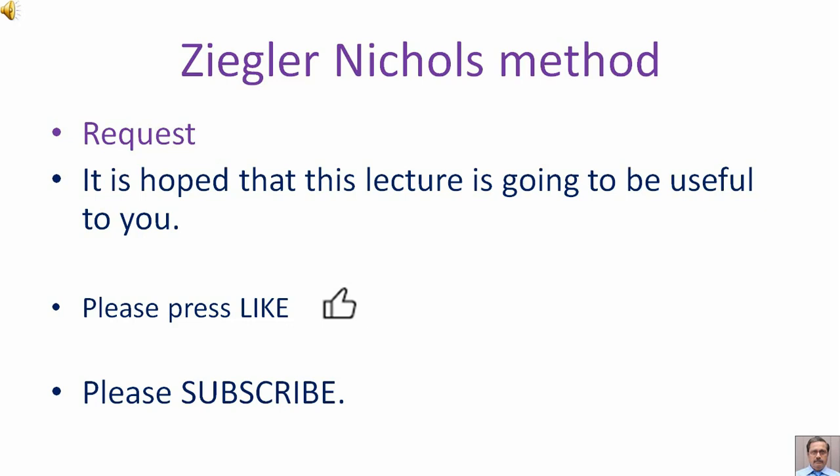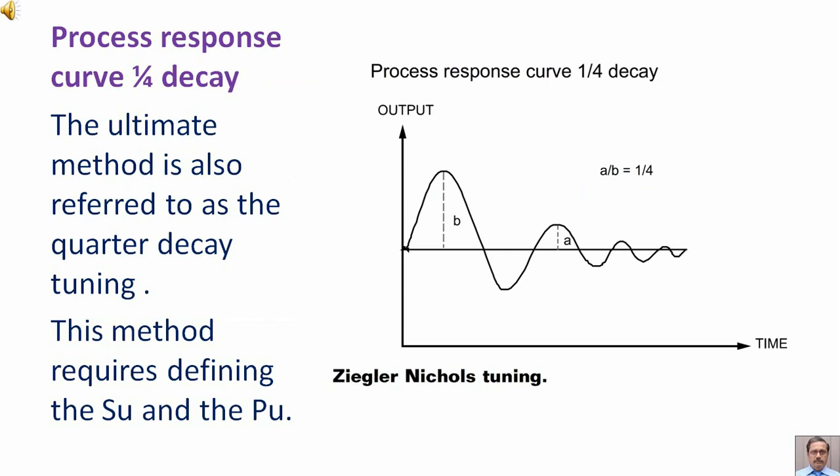Process response curve: one-quarter decay or quarter decay. The ultimate method is also referred to as the quarter decay tuning. This method requires defining the S subscript U and the P subscript U.